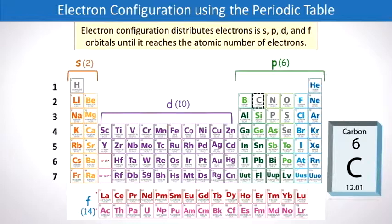S orbitals can hold 2 electrons, P can hold 6, D 10, and F 14.